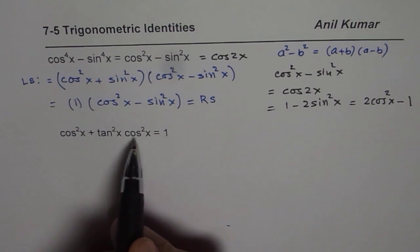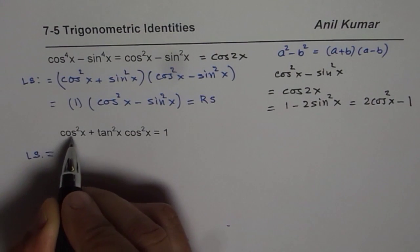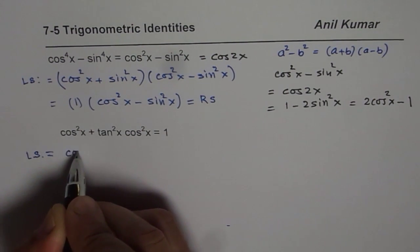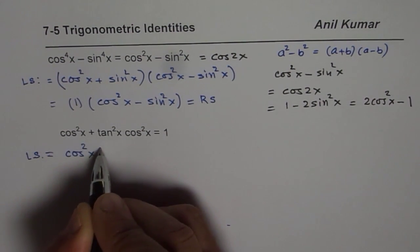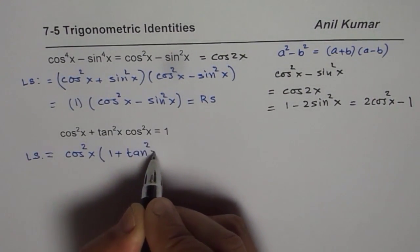Cos square x is a common factor. So we will again begin by left side. Left side is equal to, we will factor cos square x. What are we left with? 1 plus tan square x.